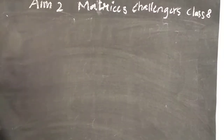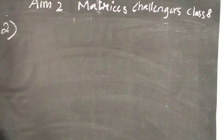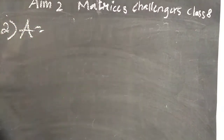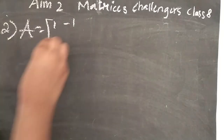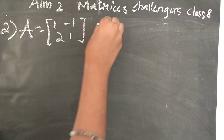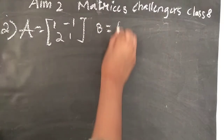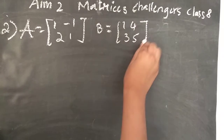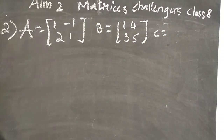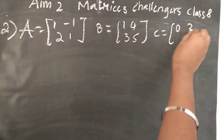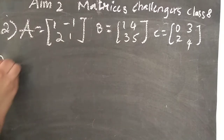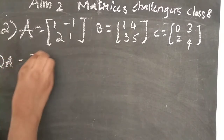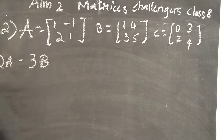Now the second question. It's similar to the previous one, but this time we have three matrices given. Matrix A is 1, minus 1, 2, 1. Matrix B is 1, 4, 3, 5. Matrix C is 0, 3, 2, 4. We have to find the value of 2A minus 3B plus 4C.